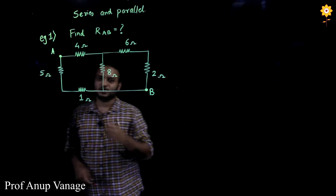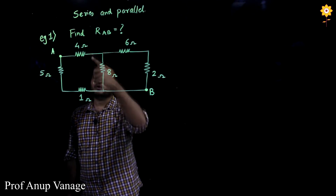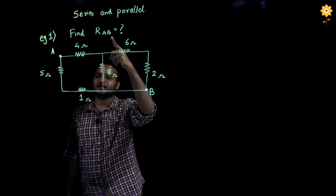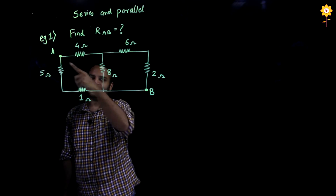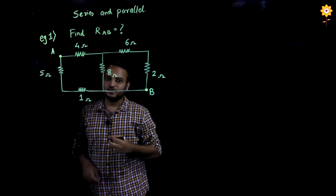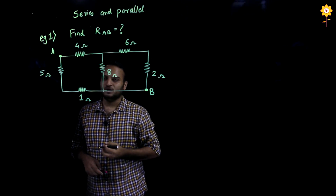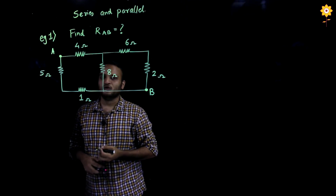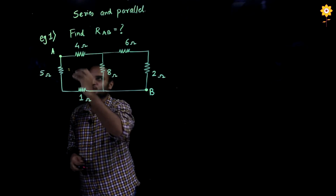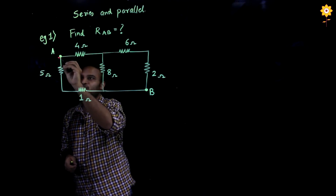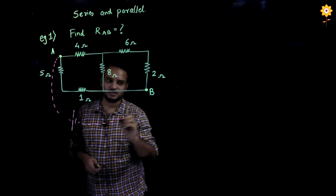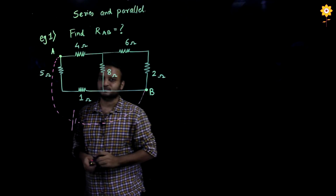In this particular network, you have been asked to find resistance between terminal A and B. The terminals A and B have been marked. To start with, whenever you get this type of problem to find resistance between two points, always imagine a battery between the two points. Since we have to calculate the resistance between terminal A and B, I will just imagine a battery between these two terminals.